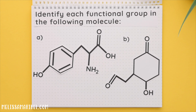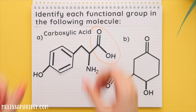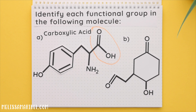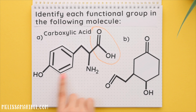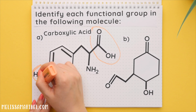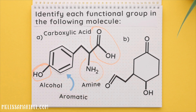One common mistake I see is that students think this is an alcohol group but it's actually a carboxylic acid. Always check what that OH is connected to — if it's connected to a carbon that is double bonded to an oxygen then it's a carboxylic acid. If it's connected to an R group or really a carbon chain then it's an alcohol, like in this case. We also have an amine right here, and a benzene ring which is aromatic.